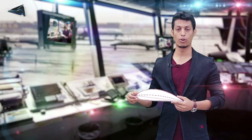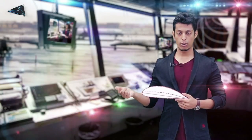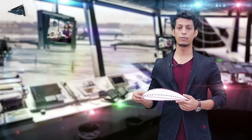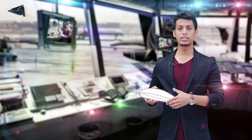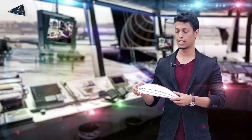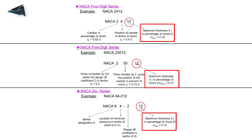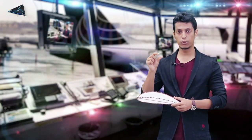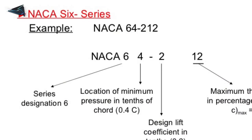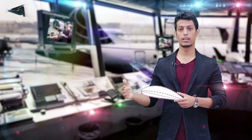In the 6-digit airfoil, the third digit gives the design lift coefficient, and the last two digits give maximum thickness as a percentage of chord — similar to the 4-digit series. For example, in NACA 642112: digit by digit, the last two digits (12) give maximum thickness. This completes the description of the 6-digit airfoil series.